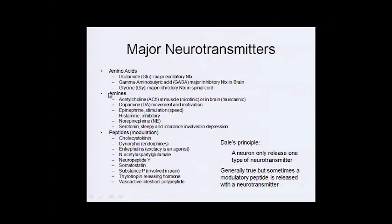Some amines include acetylcholine and dopamine, epinephrine, histamine — which is inhibitory — epinephrine, which is a stimulant, norepinephrine, and serotonin. Modulatory peptides can include all of these.